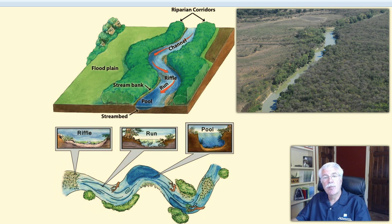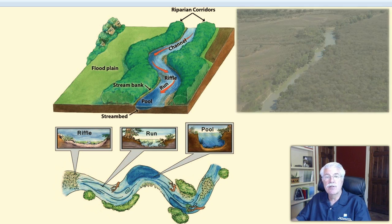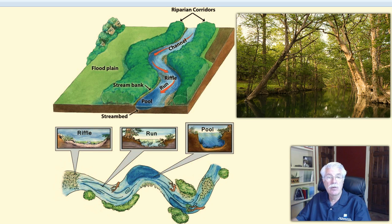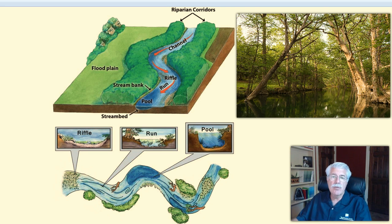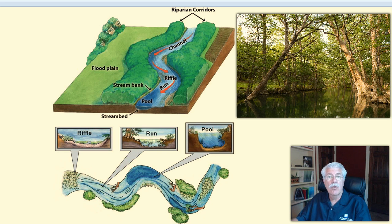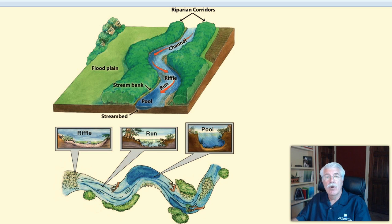Plants growing in the riparian zone help keep the stream healthy in many other ways. Trees shade and cool the water, which increases the amount of dissolved oxygen that the water can hold. Shaded stream segments may be as much as 10 degrees cooler than segments exposed to direct sunlight. Roots help hold the stream banks together, reducing stream bank erosion, and leaves and land insects that fall into the water are available for aquatic life. These leaves and insects fall from the vegetation on the banks and provide additional organic matter for aquatic food webs.